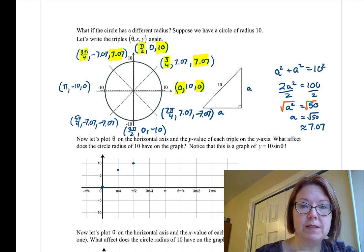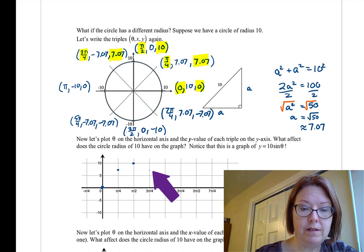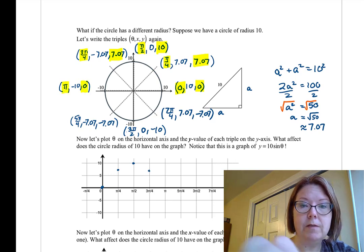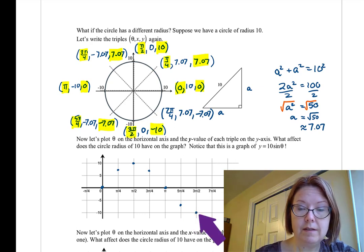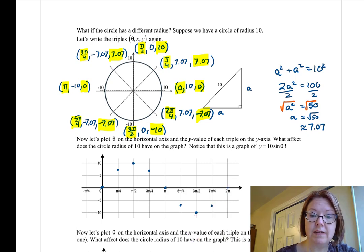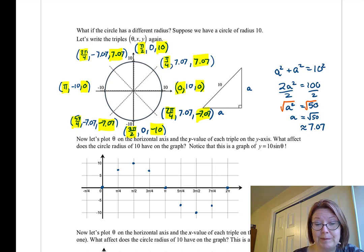Then 3π over 4 with 7.07. Then π with 0. Then 3π over 2 with negative 10. Then 7π over 4 with negative 7.07. And then we're back to 2π with a y value of 0. So there's that nice, smooth curve that we found from before.